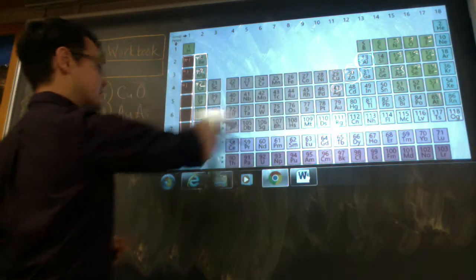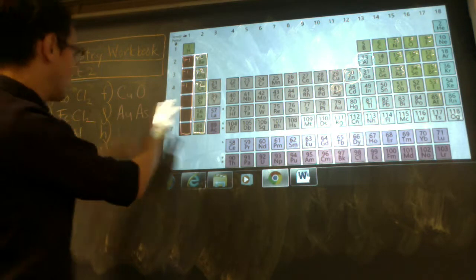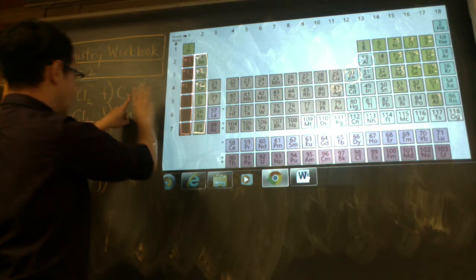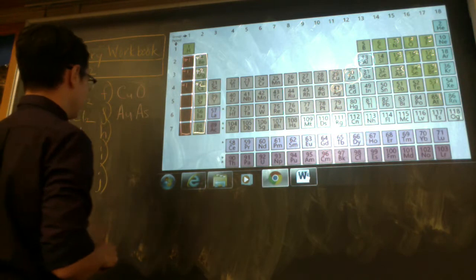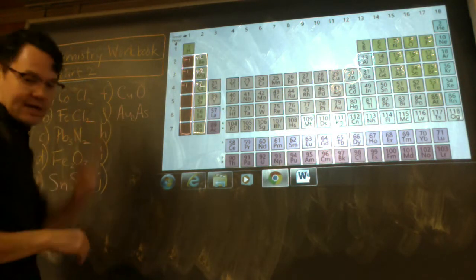So arsenic is going to be 3-. And this one was called gold(I) arsenide. So gold is 1+, arsenic is 3-. So it's going to be 3 golds and 1 arsenic: Au3As.